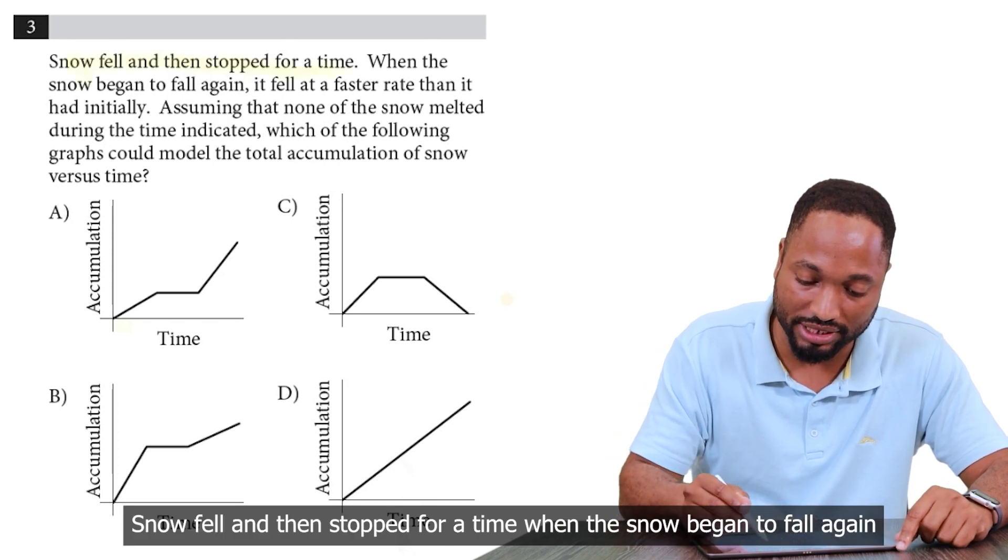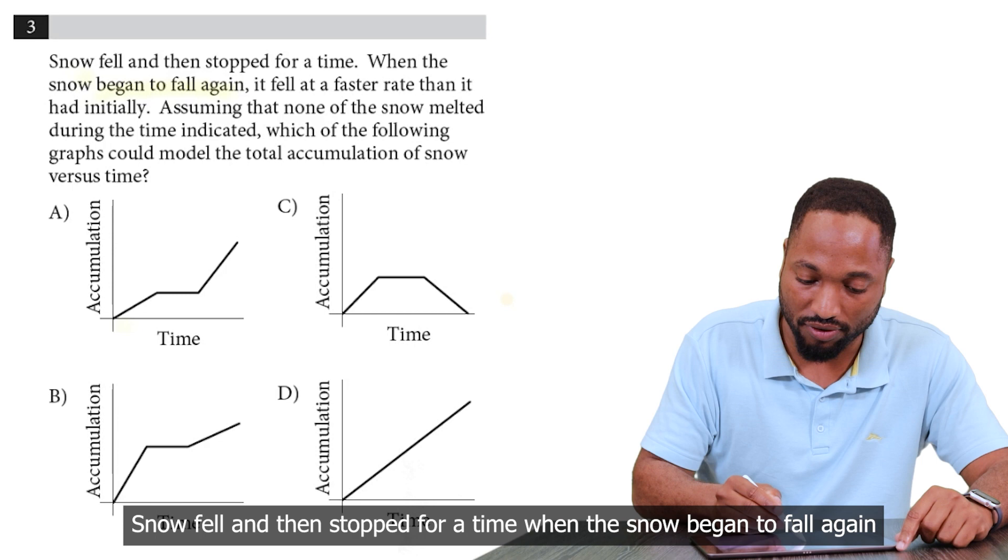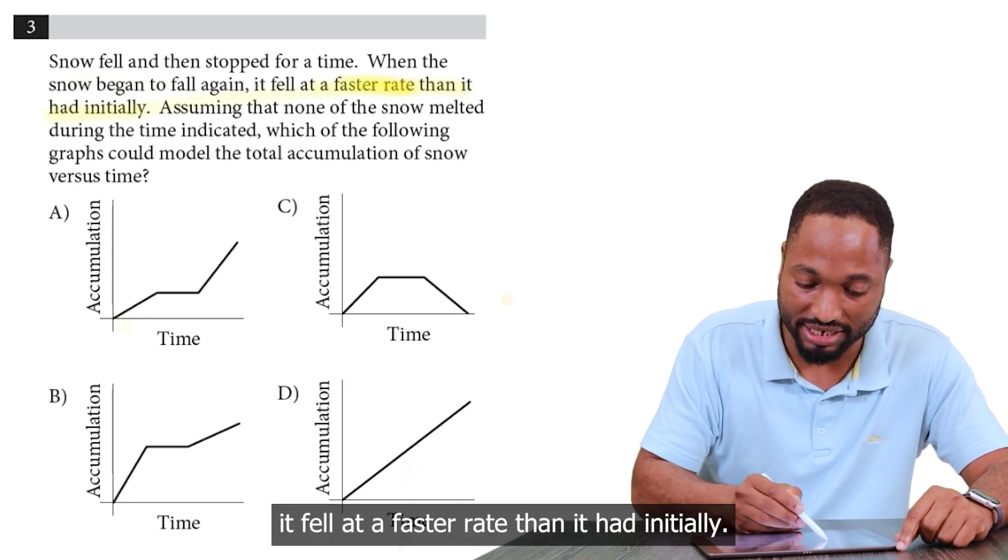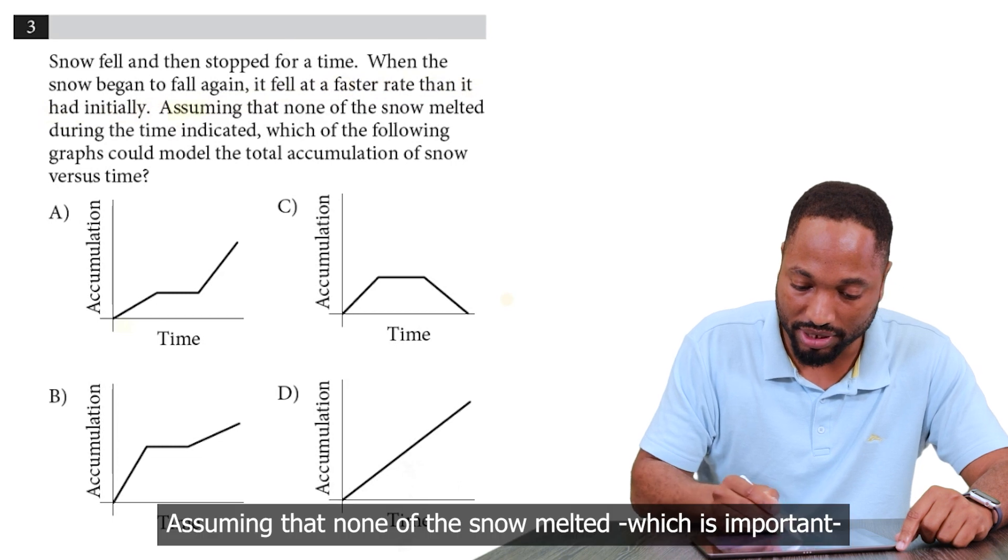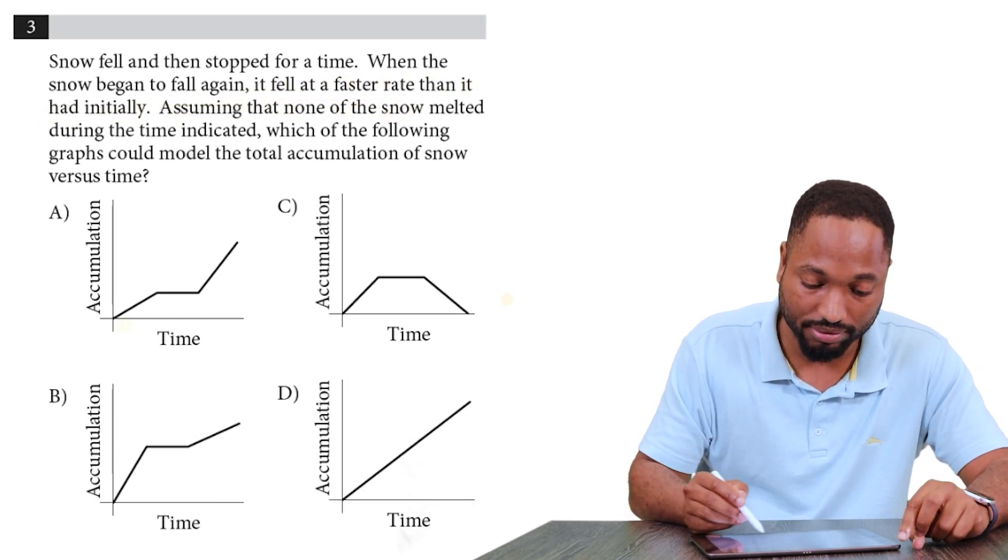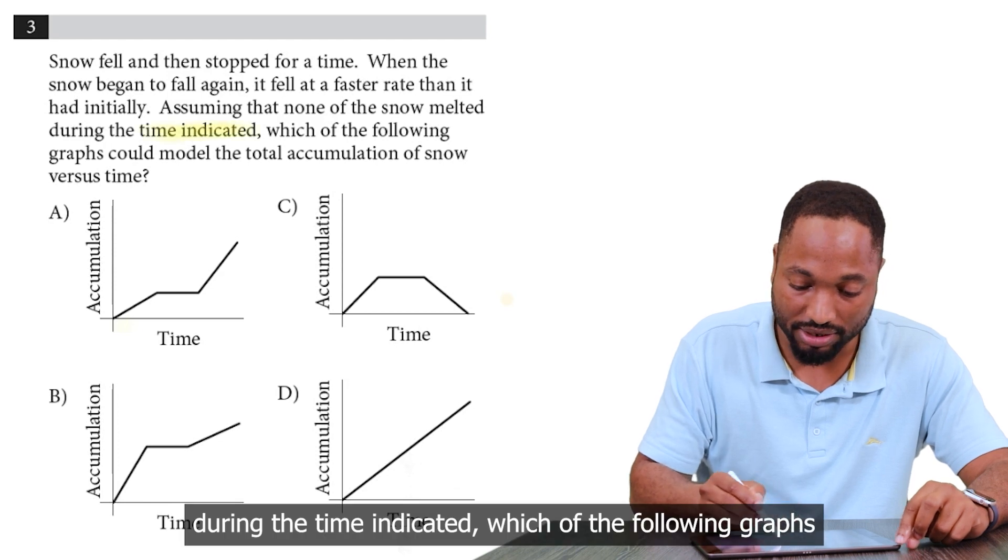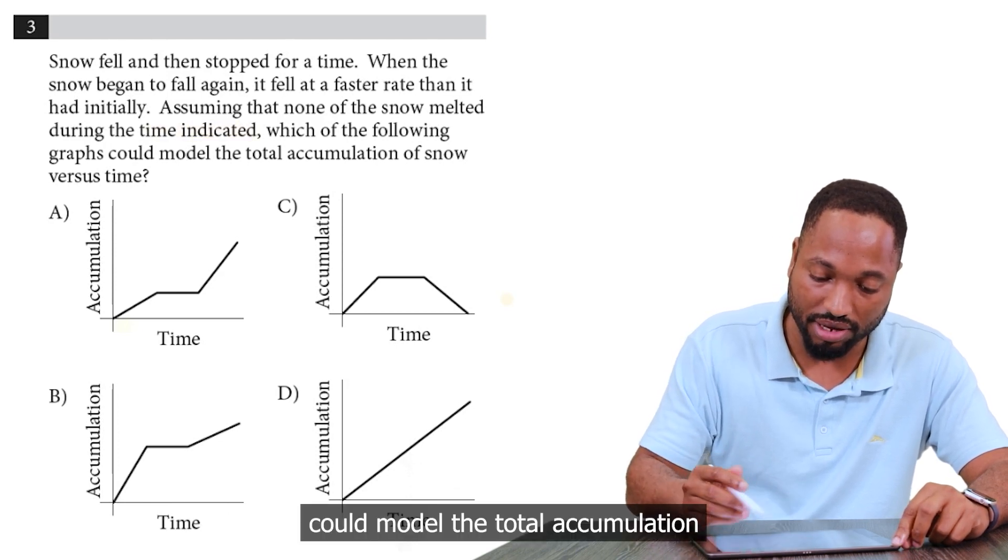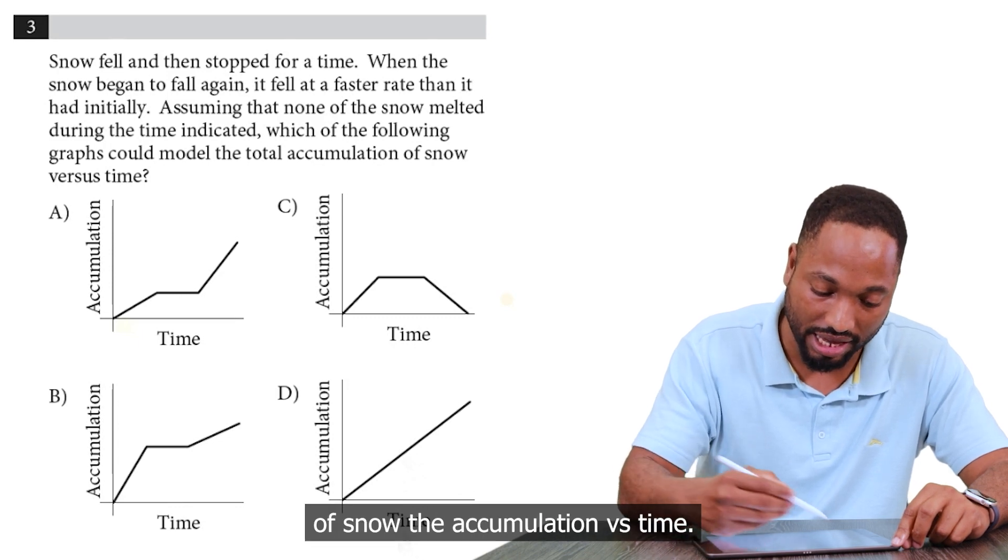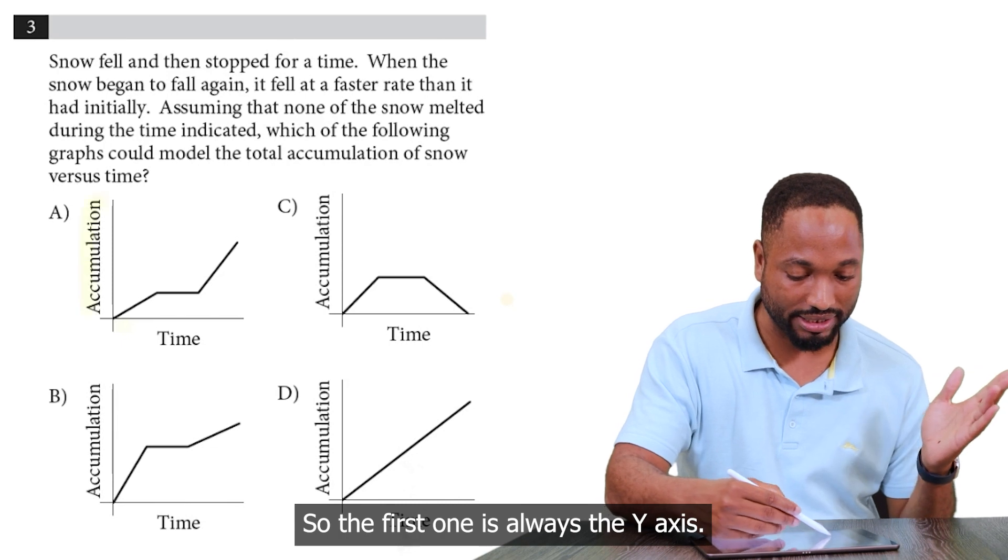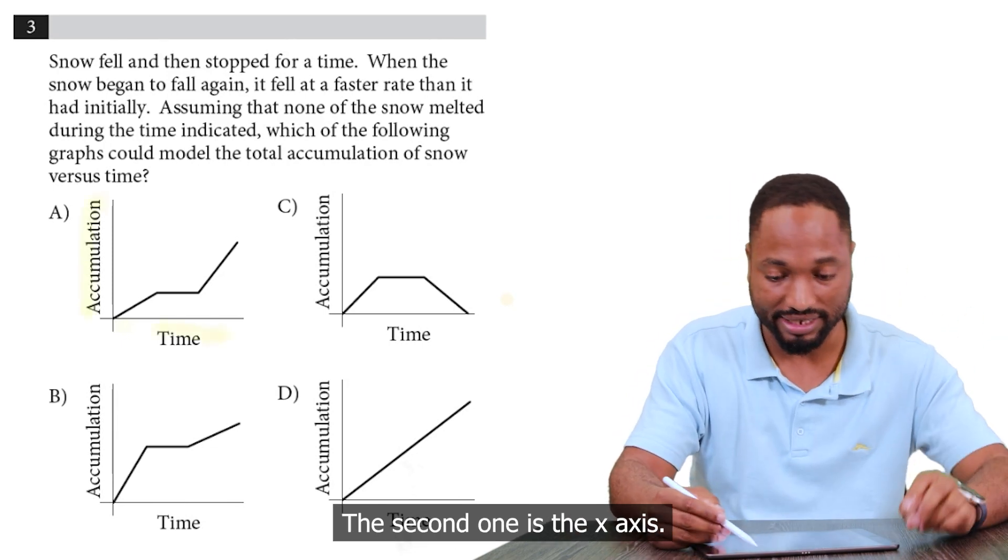Snow fell and then stopped for a time. When the snow began to fall again, it fell at a faster rate than it had initially. Assuming that none of the snow melted, which is important, during the time indicated, which of the following graphs could model the total accumulation of snow versus time. Accumulation versus time. So the first one is obviously the y-axis. The second one is the x-axis.